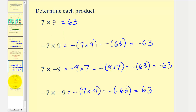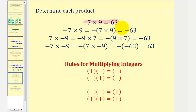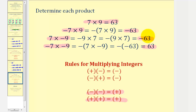To summarize one more time: a positive times a positive is positive, and a negative times a negative is also positive — so when multiplying two integers, if the signs are the same, the product is positive. A negative times a positive is negative, and a positive times a negative is also negative — so if the signs are different, the product will always be negative. This is one of several ways to understand where the rules for multiplying integers come from and why they make sense. I hope you found this explanation helpful.